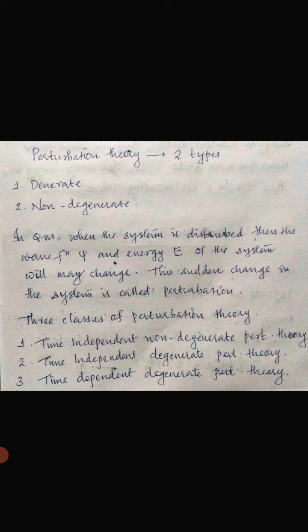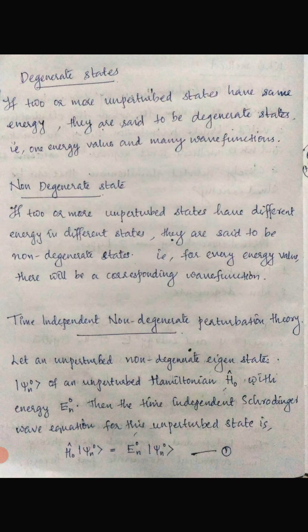In quantum mechanics, when the system is disturbed, the wave function psi and energy E of the system may change. This sudden change in the system is called a perturbation. There are three classes of perturbation theory: first, time-independent non-degenerate perturbation theory; second, time-independent degenerate perturbation theory; and third, time-dependent degenerate perturbation theory. In this chapter we are going to discuss time-independent non-degenerate perturbation theory and time-independent degenerate perturbation theory.